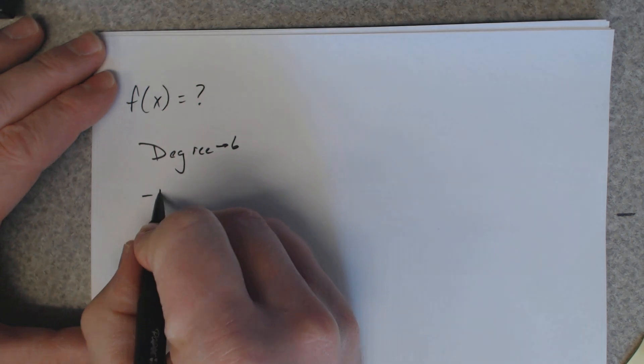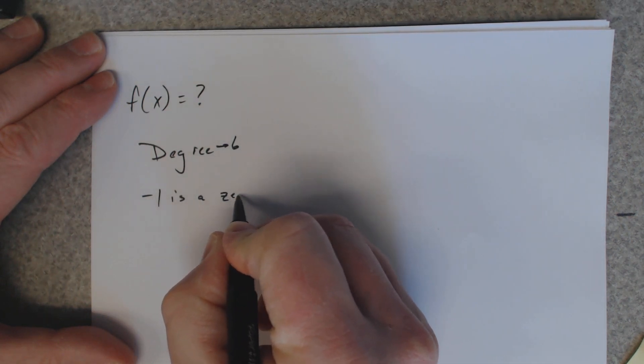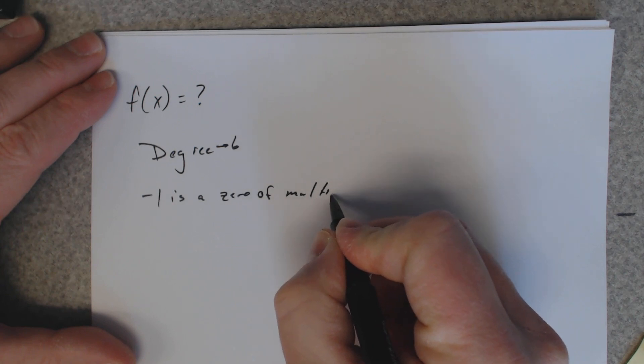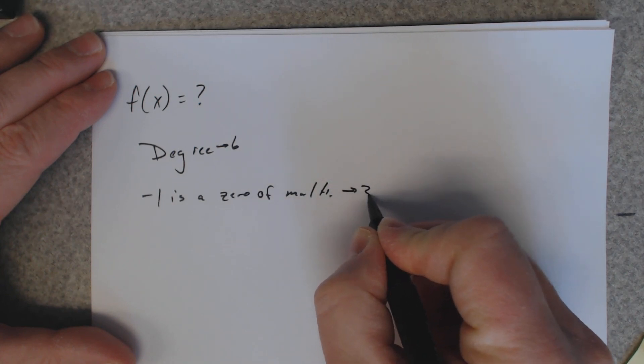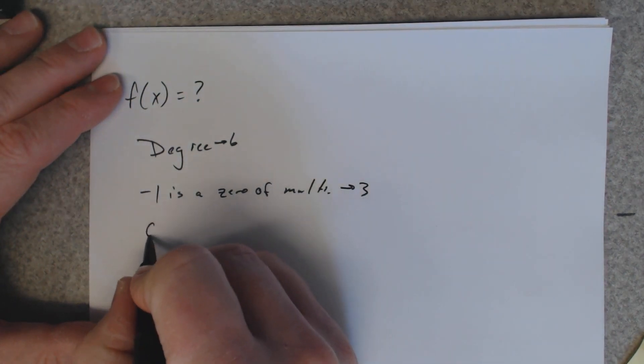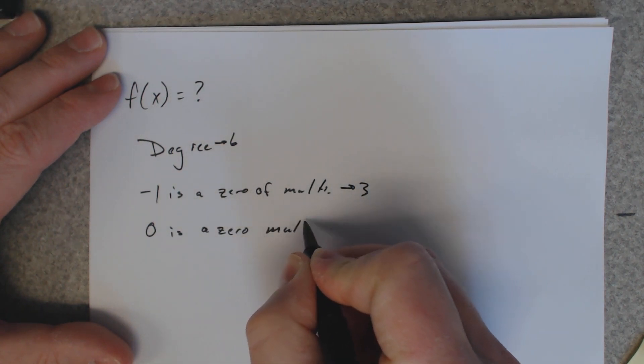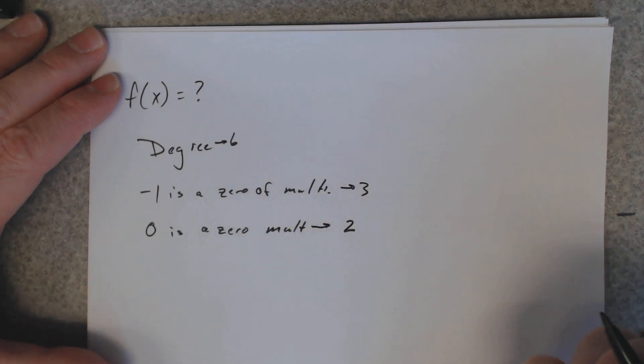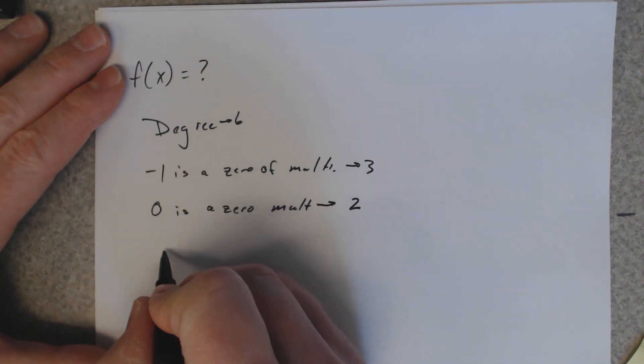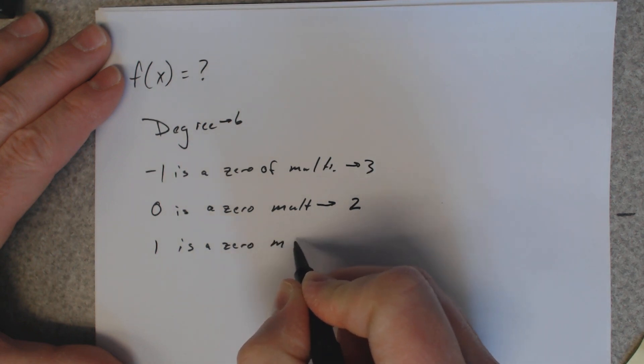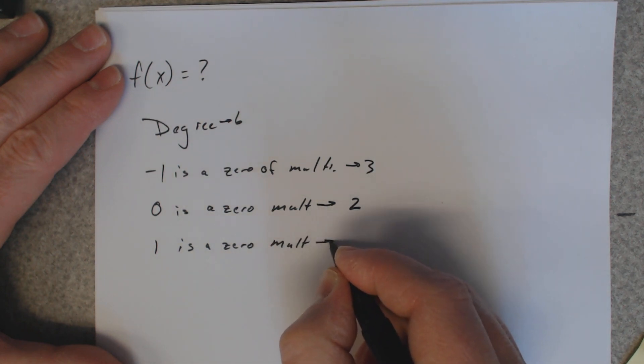And negative 1 is a zero of multiplicity 3. 0 is a zero and it has a multiplicity of 2. And then 1 is a zero with a multiplicity of 1.